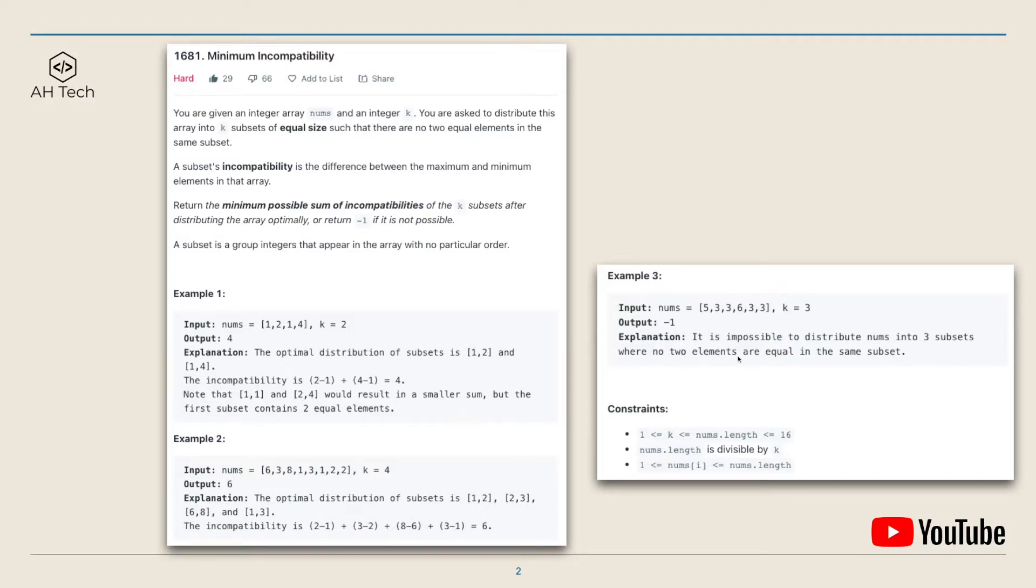For example 3, it is not possible to distribute the nums into three subsets where no two elements are equal in the same subset. So we return negative 1 in this case.